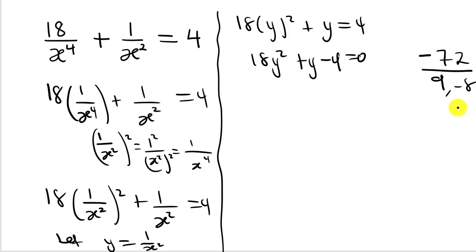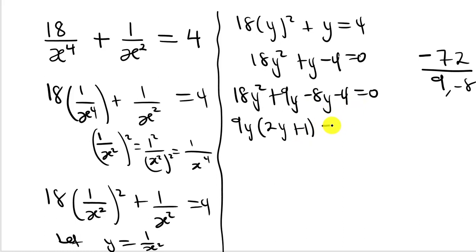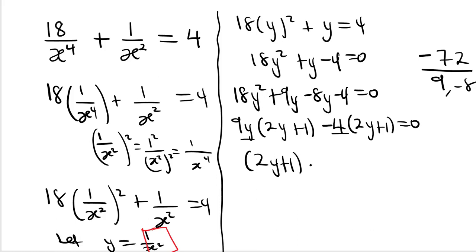In place of the y term we substitute these two numbers, giving us 18y squared plus 9y minus 8y minus 4, equal to zero. Taking the first two terms and factorizing, 9y is the common factor, leaving (2y + 1). Taking the last two terms, negative 4 is the common factor, also leaving (2y + 1). So (2y + 1) is the common factor, giving (2y + 1)(9y − 4) equals zero.